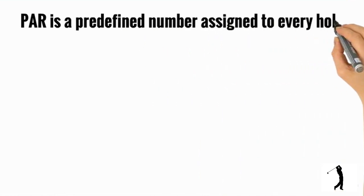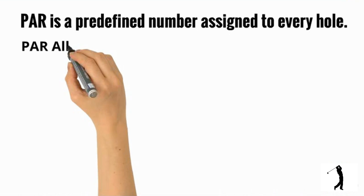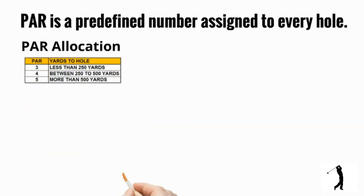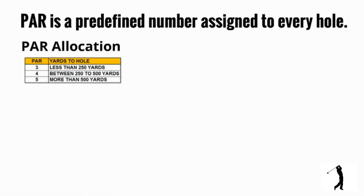So basically a par is a predefined number assigned to every hole. As a ballpark figure, a hole whose distance from the tee box is less than 250 yards would be a par 3 — that is, it would take an ideal golfer three strokes to hole the ball. A par 4 would be a distance between 250 to 500 yards, and more than 500 yards would generally be a par 5. So in professional golf, you mainly have a mix of par 3s, par 4s and par 5s.